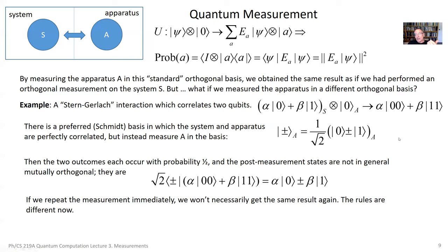If we were to repeat the measurement immediately after, we wouldn't get the same outcome. If we get the plus outcome, the state becomes alpha zero plus beta one — the same as initially. If we get the minus outcome, it becomes alpha zero minus beta one. Then measuring again, the two outcomes still have probability one half whatever they were the first time. So this is really a different type of measurement than we've discussed before — it doesn't have the property that if you immediately repeat the measurement you get the same outcome with probability one.